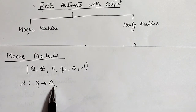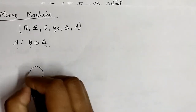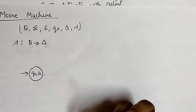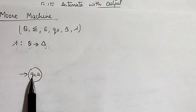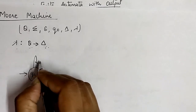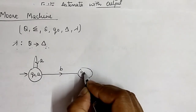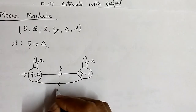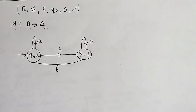So we take one example of how the Moore machine works. Suppose we have a DFA like this — q-naught is the initial state and has an output 0, because in Moore machine the output is associated with the state. So q-naught is represented as q-naught comma 0. On input a it remains in q-naught, on input b it moves to the next state q1 with output 1, and on b from q1 it moves back to q-naught.